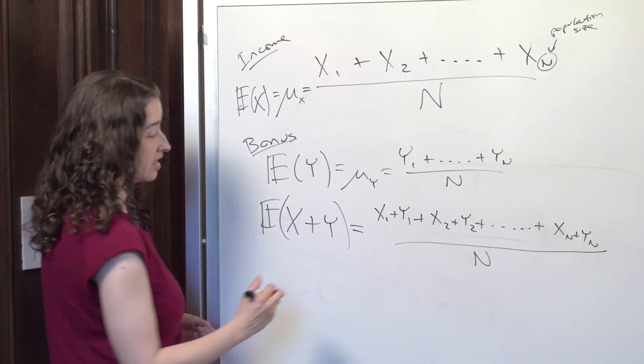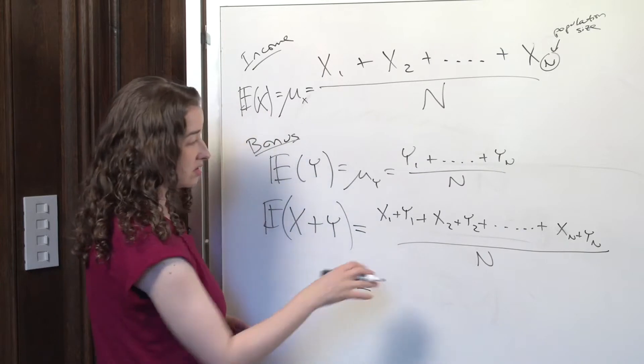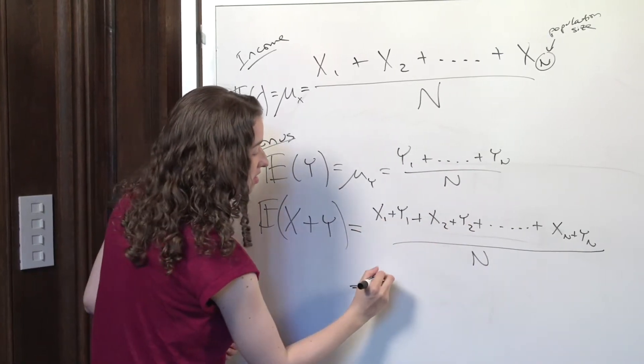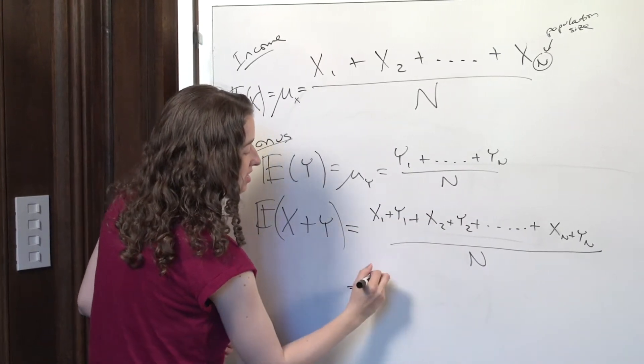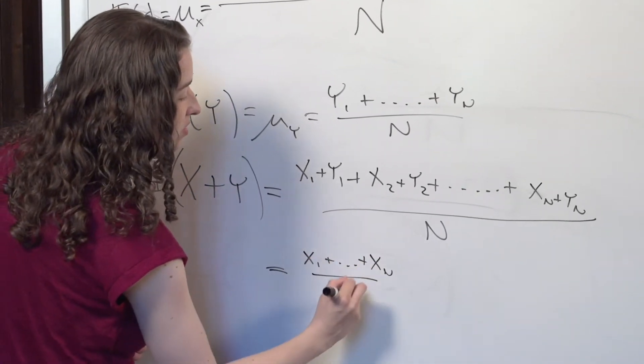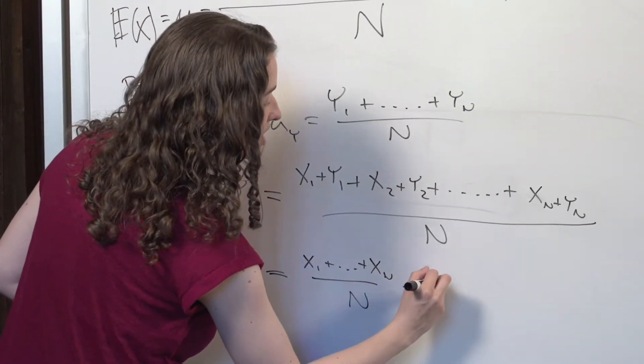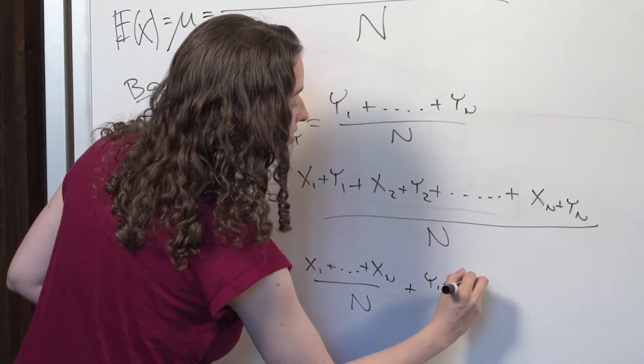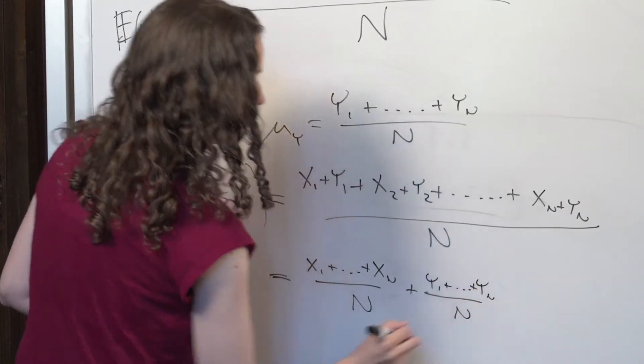And the thing to see here is that I can write out this expression right here. By separating the X's and the Y's, I can write this as the sum of all the X values over N, plus the sum of all the Y values over N.